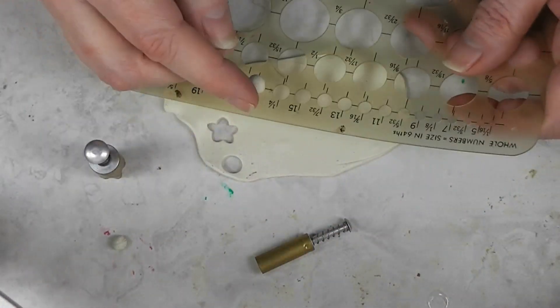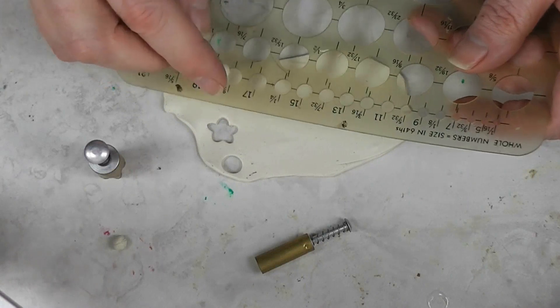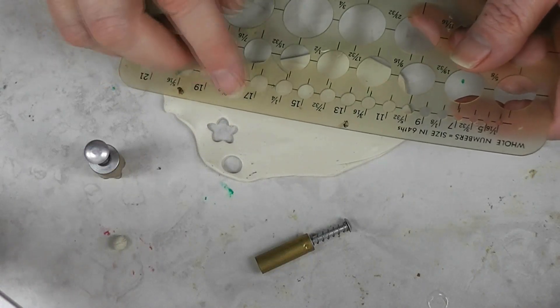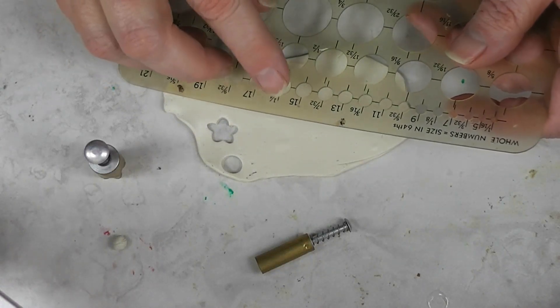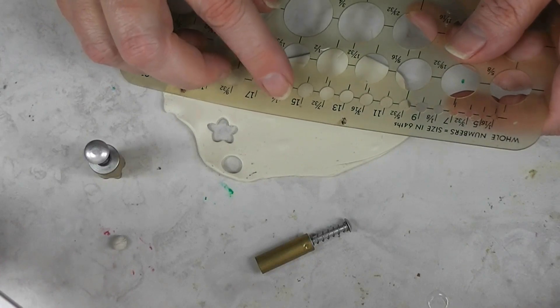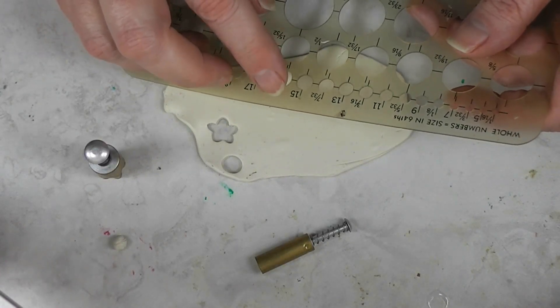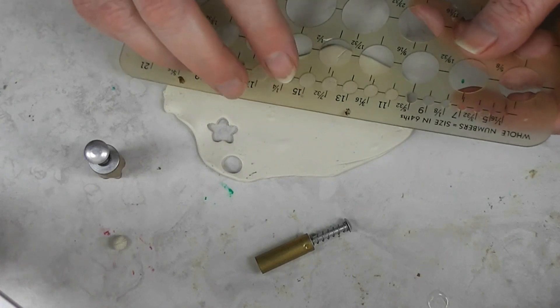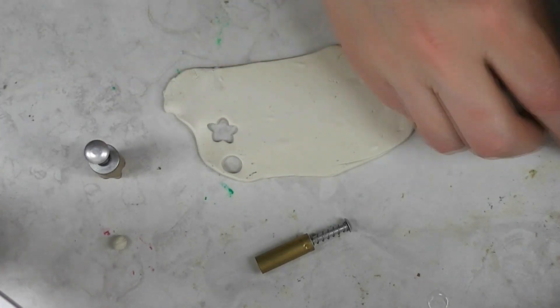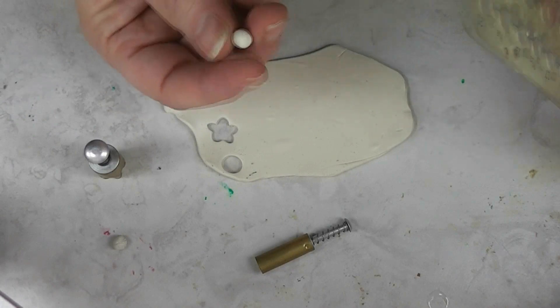Alright, now I've got this one. And this one is just a little bit bigger. That one's right about a quarter inch. Okay, so we know that this thickness will give us a quarter inch ball of clay. It's a very tight fit, but it fits.